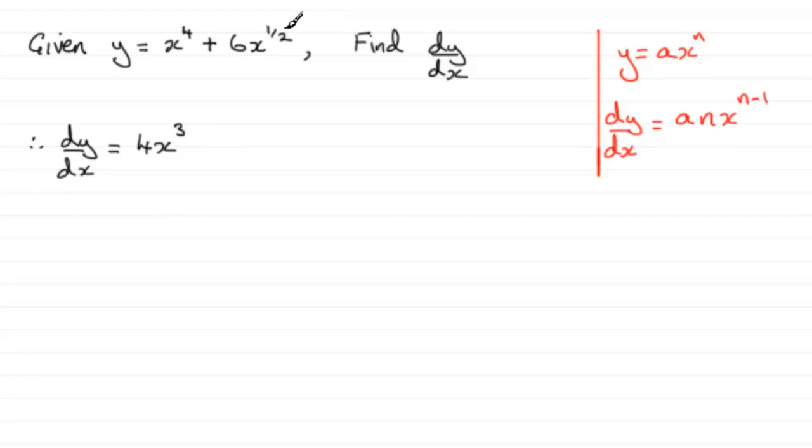And then for the next term, half times 6 is going to be 3, reduce the power by 1 and you end up with x to the power minus 1 half. Now expressed in its simplest form I would tend to say that the term 3x to the power minus 1 half is not in its simplest form.